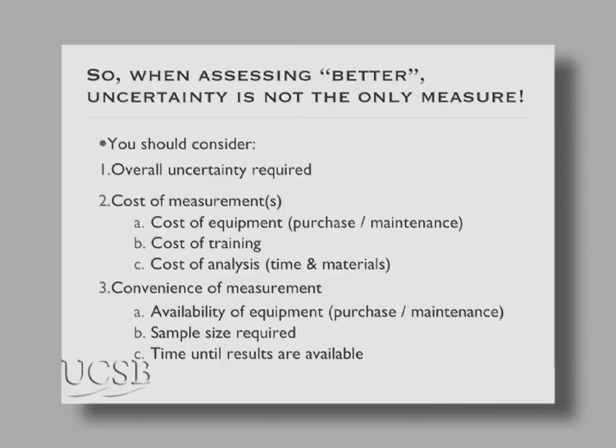One of the most important parts is the convenience of measurement. If you want highly accurate alkalinity and total carbon measurements, you can send bottles to a lab and get analyzed — on a good day within two weeks, on a bad day much longer. That's $100 a sample, but you didn't have to spend $80,000 on equipment or $40,000 on training. However, that delay is often not convenient when designing the next part of your experiment.